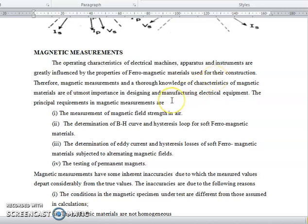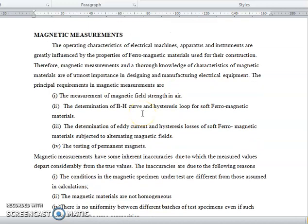Therefore, magnetic measurement and thorough knowledge of characteristics of magnetic materials are of utmost importance in designing and manufacturing electrical equipment. The principal requirements in magnetic measurements are: the measurement of magnetic field strength in H, determination of BH curve and hysteresis loop for soft ferromagnetic materials.